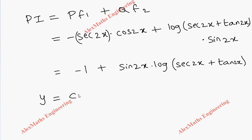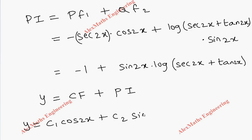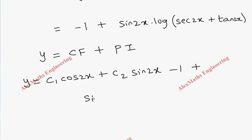The complete solution is y = CF + PI, so y = c₁ cos(2x) + c₂ sin(2x) - 1 + sin(2x)·log|sec(2x) + tan(2x)|.